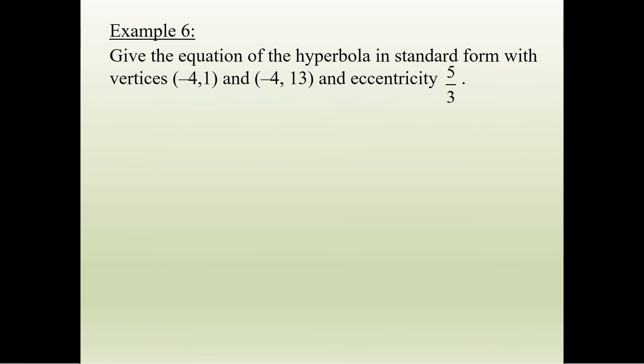Now, say we're given this problem. This is just like it was with an ellipse. We want to give the equation of hyperbola, given its vertices and its eccentricity. So I know if my vertices are at negative 4, 1 and negative 4, 13, the y value is changing. That means it's going to have a transverse axis that is vertical.